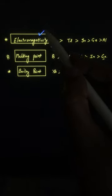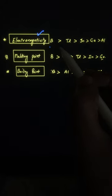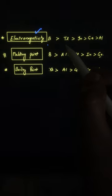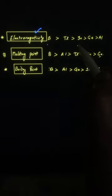The first property is electronegativity. For the thirteenth group, boron has maximum electronegativity, followed by thallium, then indium, then gallium, and aluminium.